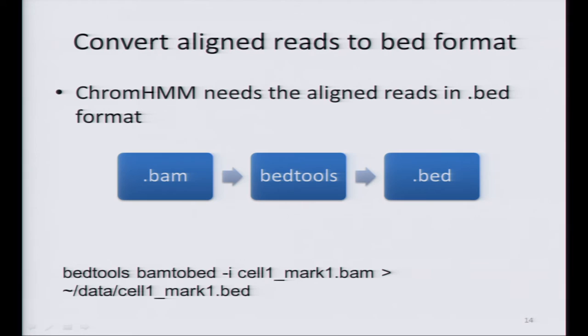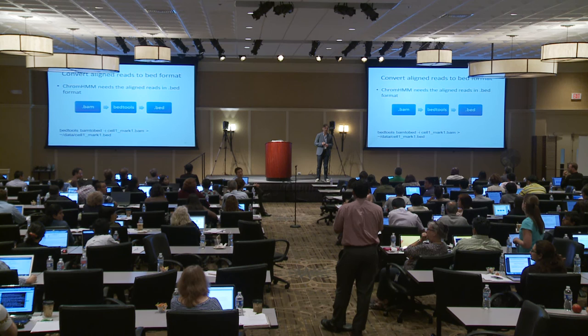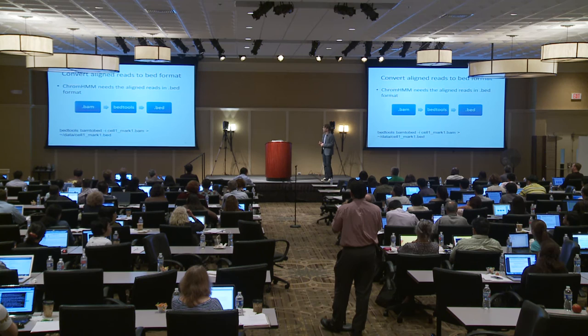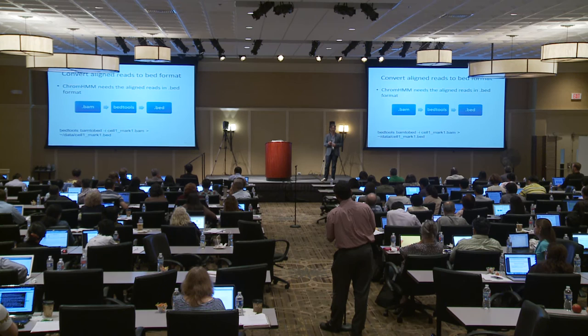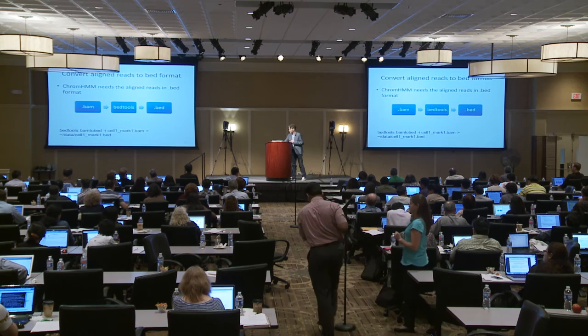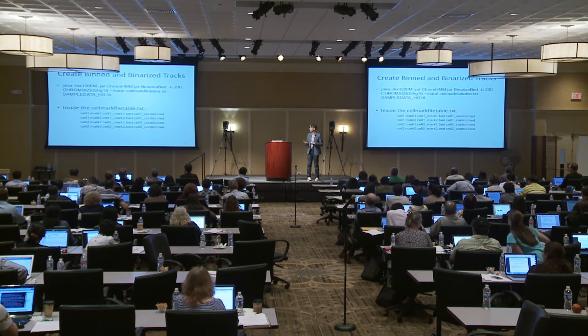Another question: do we need to use only uniquely aligned reads, or will reads that align to multiple places interfere with ChromHMM's calculations? Usually people first filter the reads, taking only the uniquely aligned reads. It's better to filter out reads that map to multiple locations.